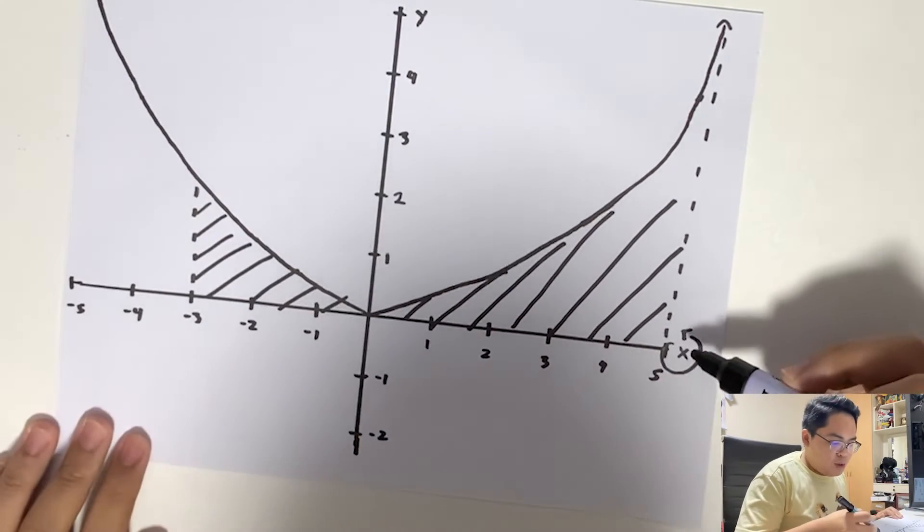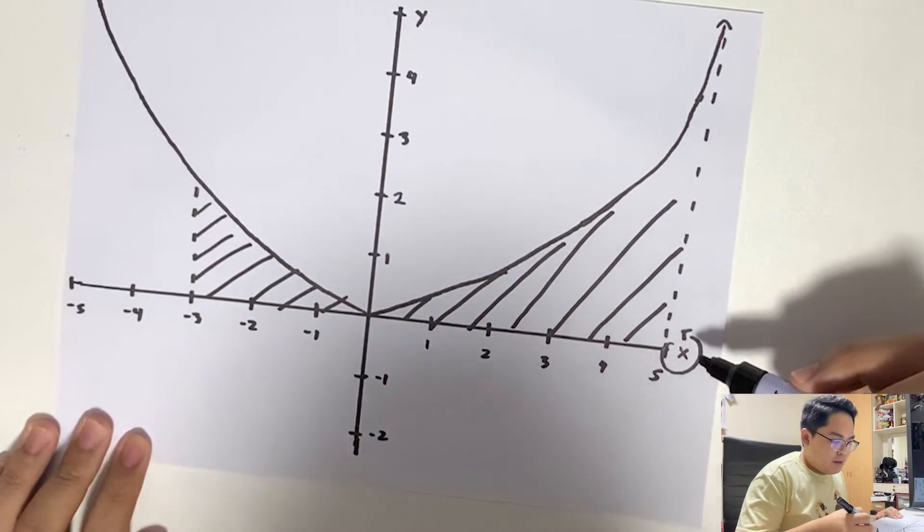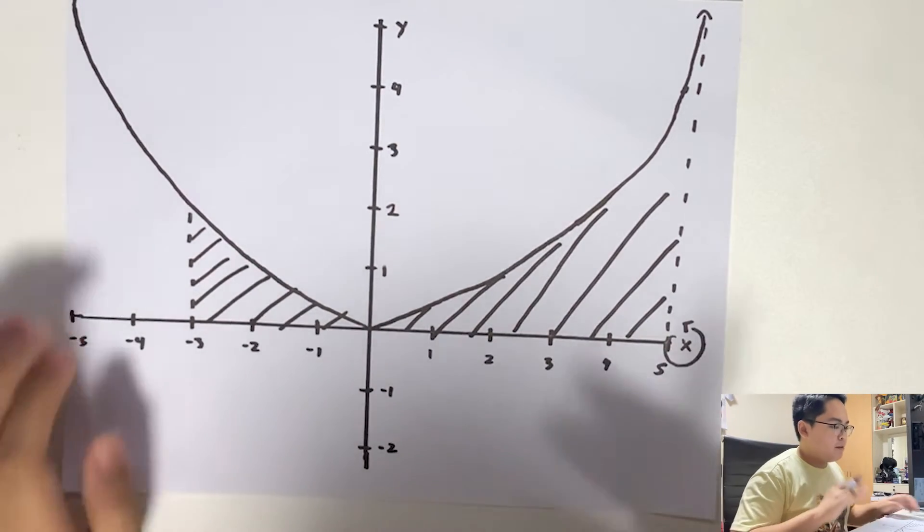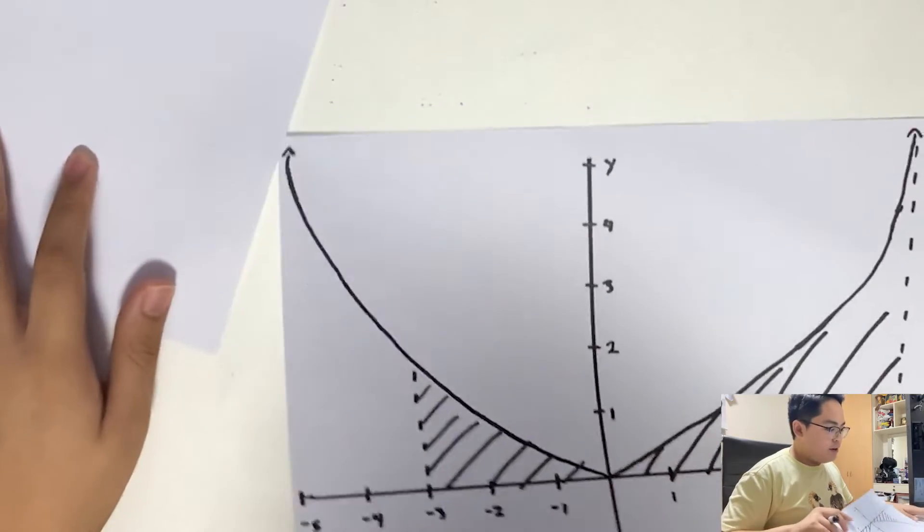So our solid will create a revolution around the x-axis. Since the x-axis is a boundary of the solid, therefore we'll be using the disk method. So let's go ahead and create our solution.